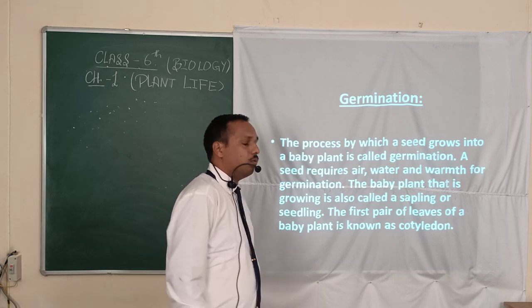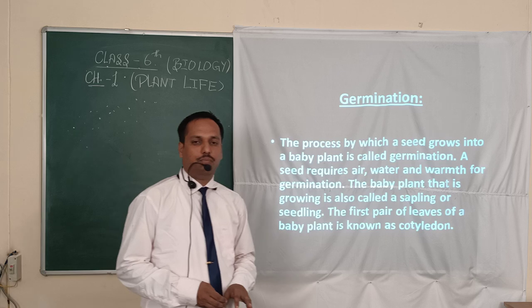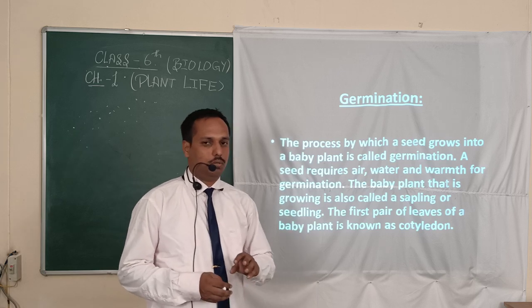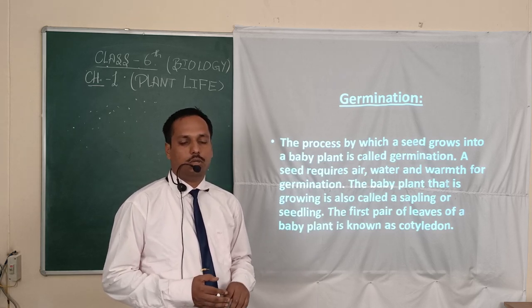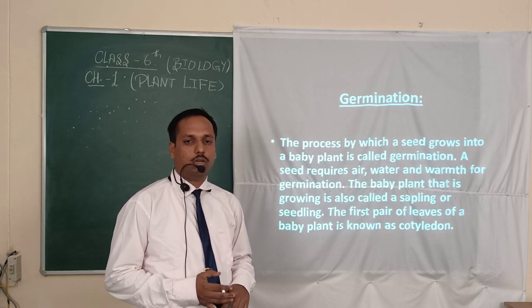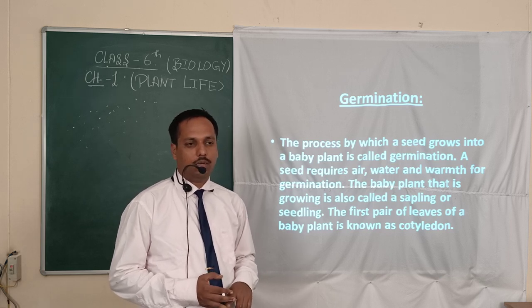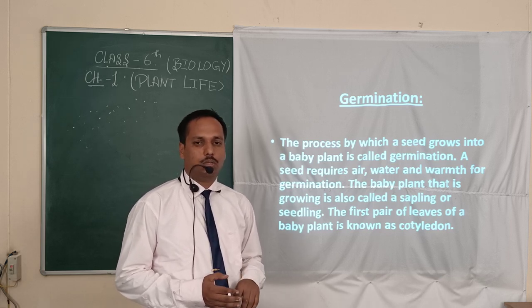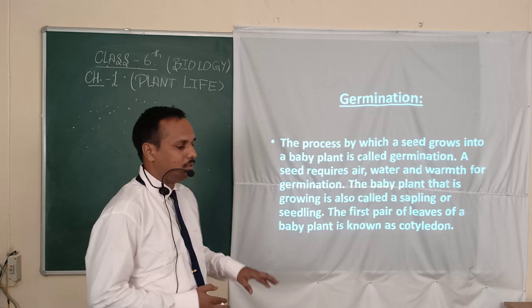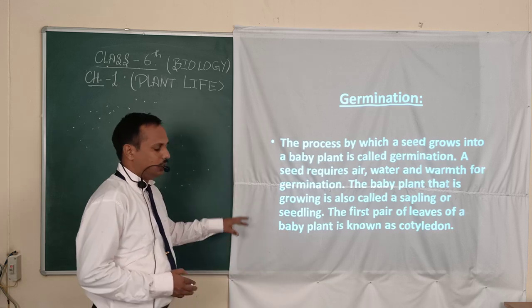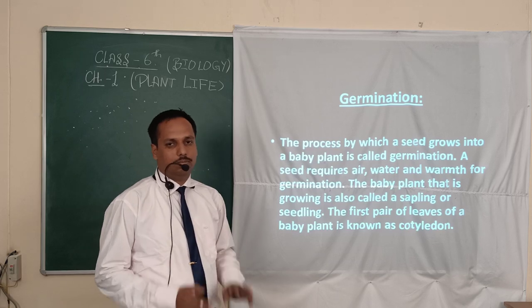One more thing to note: the first pair of leaves of a plant is called the cotyledon. Cotyledons provide food to the baby plant and are also the reserved food material for the baby plant. I think this chapter is now clear to you. Thank you.